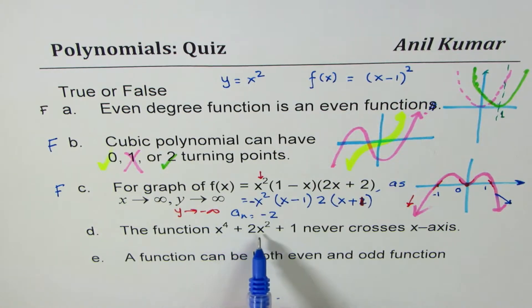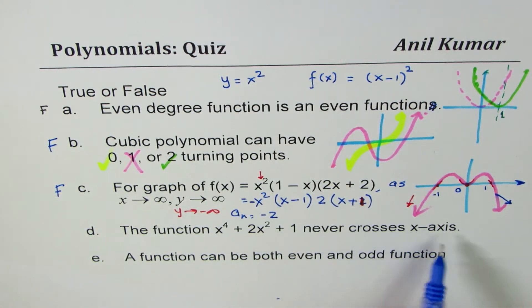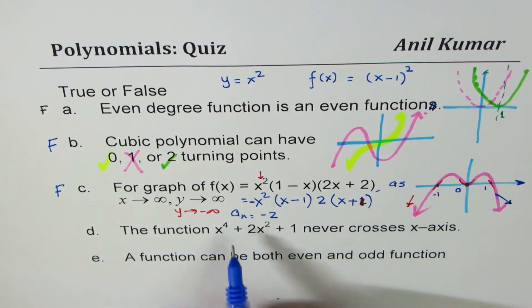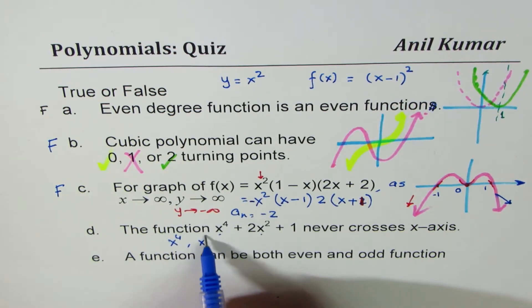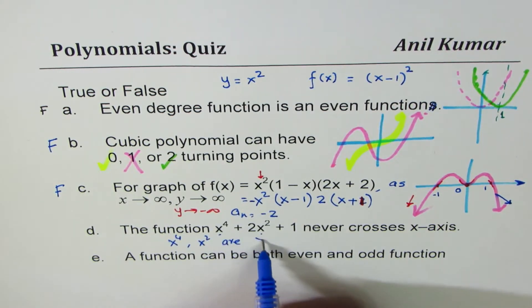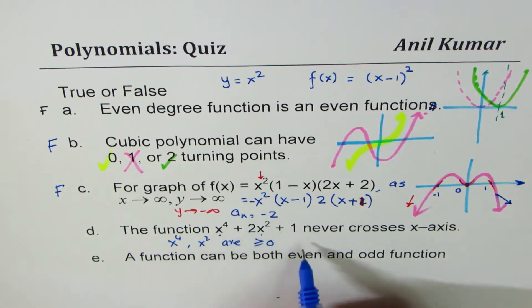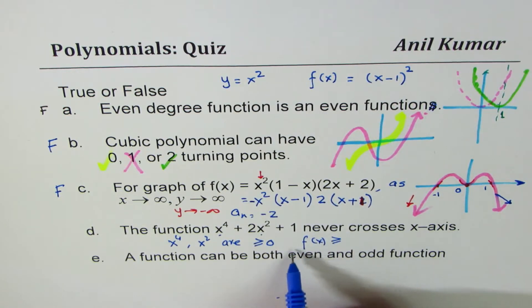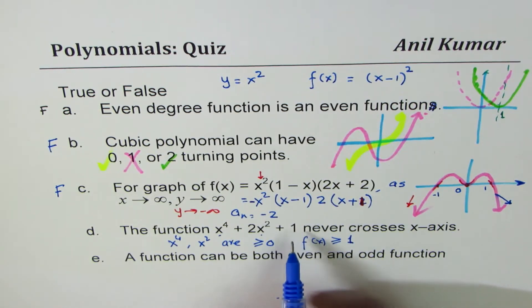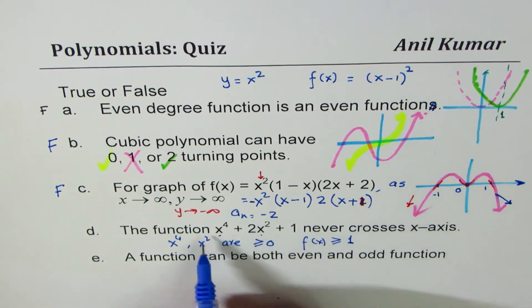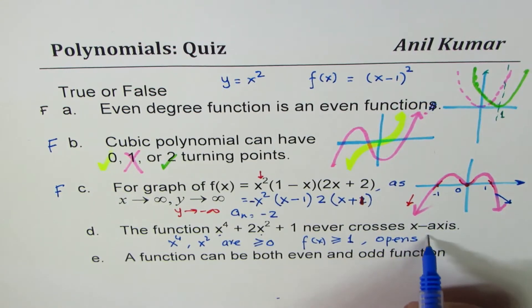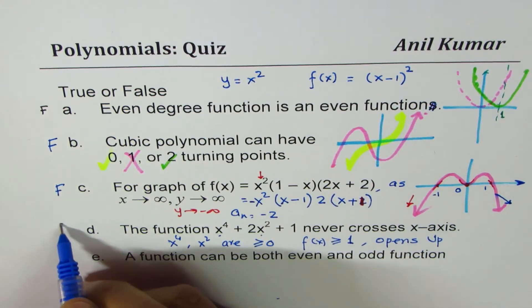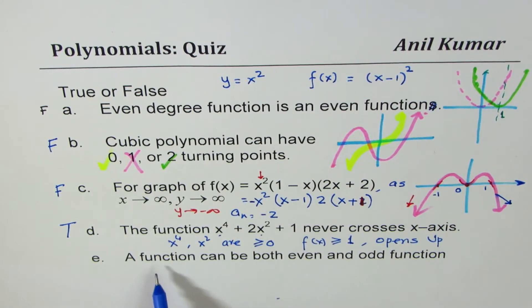Statement D: the function x⁴ + 2x² + 1 never crosses the x-axis. This is true. Both x⁴ and x² are greater than or equal to zero for all real values, so adding 1 makes f(x) greater than or equal to 1. The minimum value is 1, so the function never touches or crosses the x-axis. Since the leading coefficient is positive, it opens upward. This statement is true.